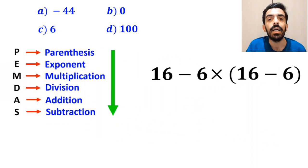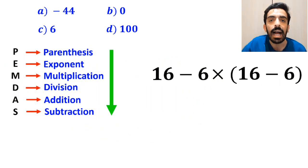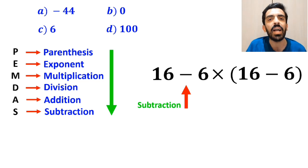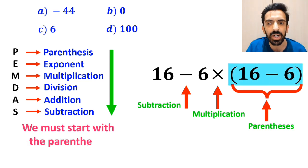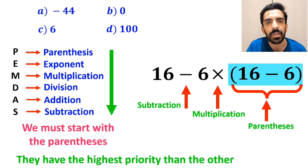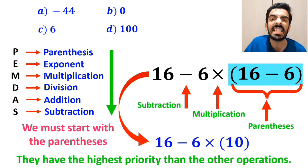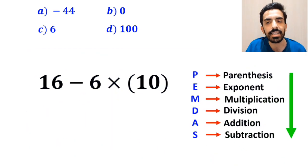As you can see on this screen, in this expression, first we have a subtraction sign, then a multiplication sign, and finally parentheses. We must start with the parentheses first because they have the highest priority. So we can rewrite this expression as 16 minus 6 then multiply by 10.